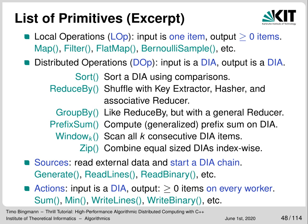There are two special types of DOPs: sources and actions. Sources start a DIA chain by reading external data or generating it on the fly — examples are Generate, ReadLines and ReadBinary. Actions like Sum, Min, WriteBinary or WriteLines are also distributed operations but actually trigger execution of the chain of DIA operations and write files or deliver a result on every worker, which determines the future program flow.